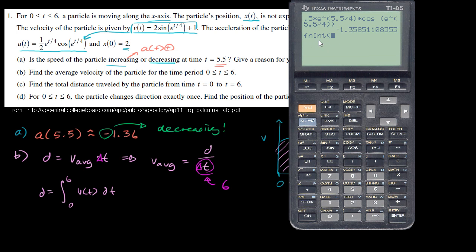So the definite integral — I'll write v of t as a function of x since x is an easier key to reach. We want to take the definite integral of 2 times the sine of e to the x over 4, plus 1. I'll tell the calculator we're integrating with respect to x. That is our velocity function expressed as a function of x, integrating from 0 to 6.